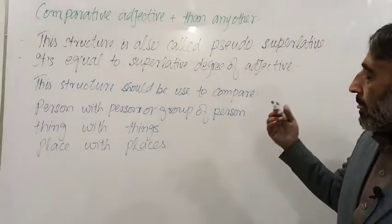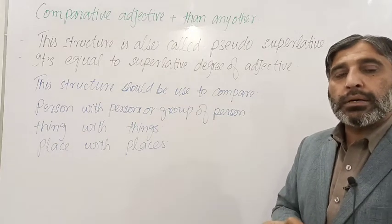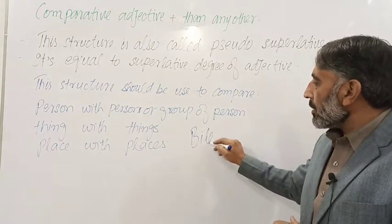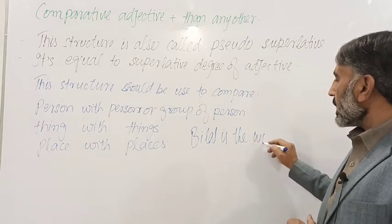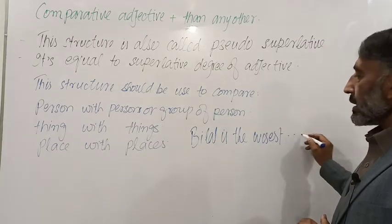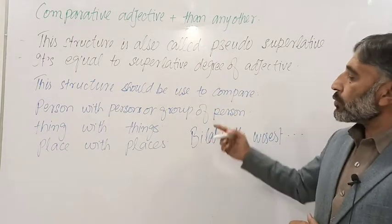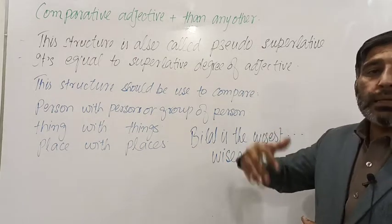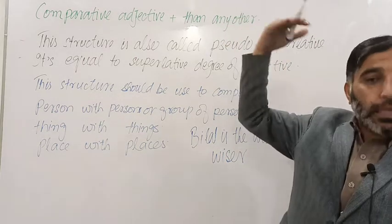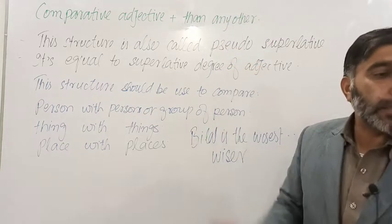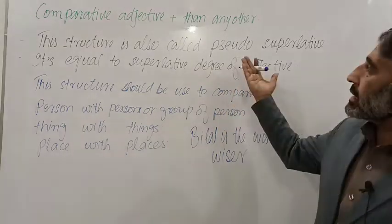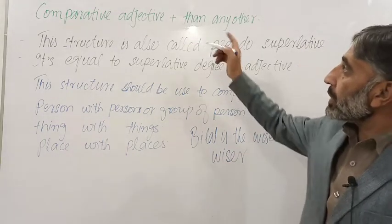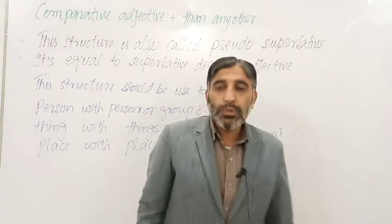For example, if we say 'Bilal is the wisest student in the class,' we can say 'Bilal is wiser than any other student in the class.' Or 'Bilal is taller than any other student in the class' — meaning he is the tallest student. 'Bilal is fatter than any other student in the class.' So 'than any other' makes this degree equal to the superlative degree.